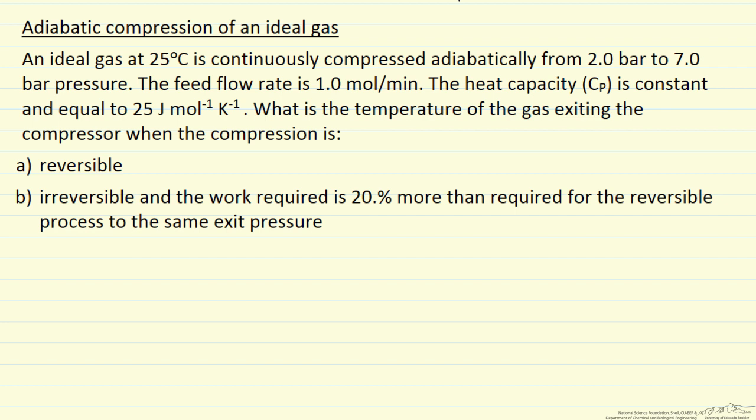In this problem we are going to look at an ideal gas that we are going to continuously compress adiabatically. So this is a flow system. Inlet is at 2 bar and the outlet is at 7 bar pressure. Given the feed flow rate, given the heat capacity which is constant for this gas, and the question is what is the temperature of the gas that is leaving the compressor if we do it reversibly and then if we were to do it irreversibly in a system that required 20% more work than is required for the reversible process.